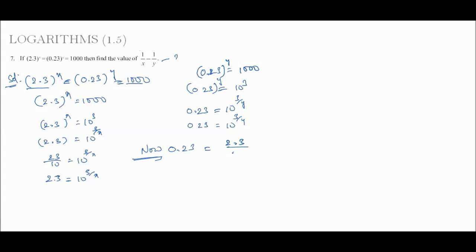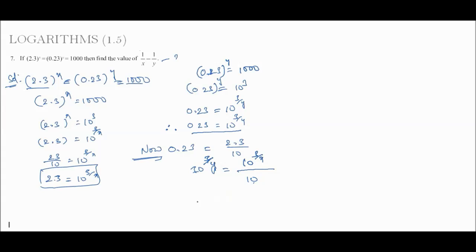Now 0.23 can be written as 2.3 divided by 10. So 10 to the power 3/y equals 2.3 divided by 10, and 2.3 equals 10 to the power 3/x, so we get 10 to the power 3/y equals 10 to the power 3/x divided by 10 to the power 1, which equals 10 to the power (3/x minus 1).